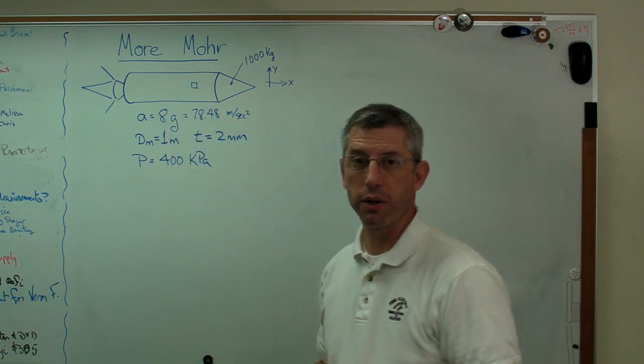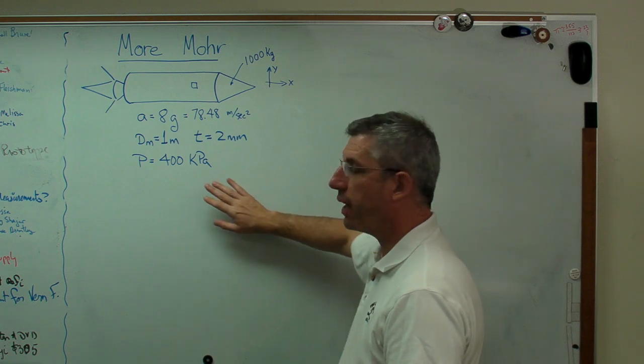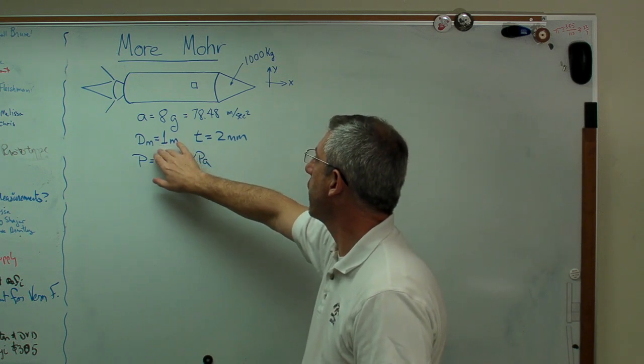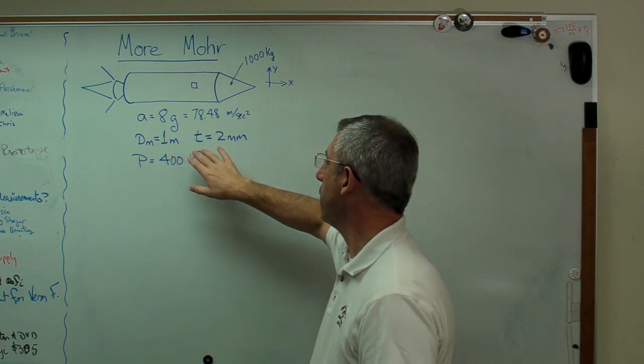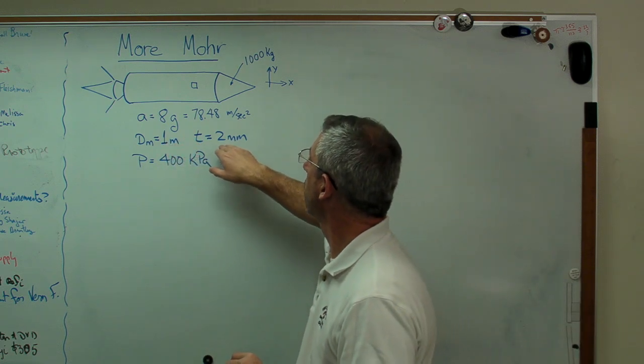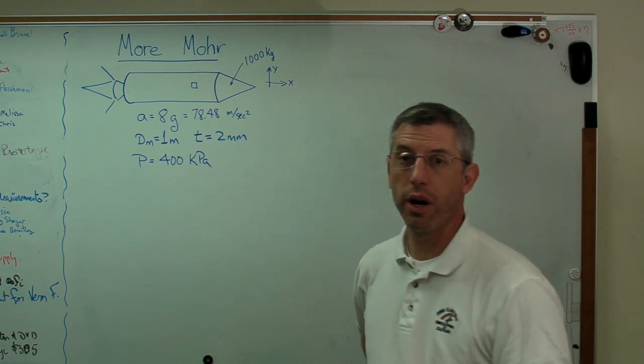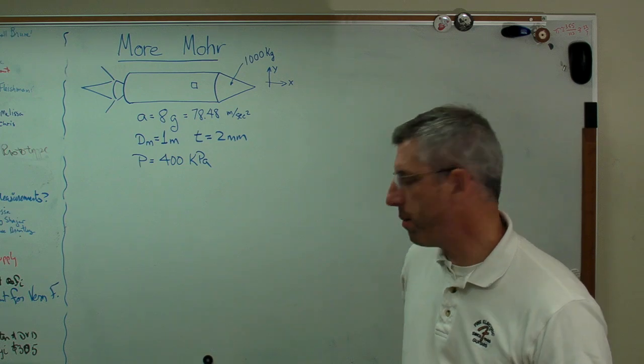Since this is a thin-walled pressure vessel, we've also got hoop stresses and longitudinal stresses. The mean diameter is one meter, halfway between the inside and the outside surfaces. The wall thickness is two millimeters, and the interior pressure is 400 kilopascals, so it's about four atmospheres of pressure.